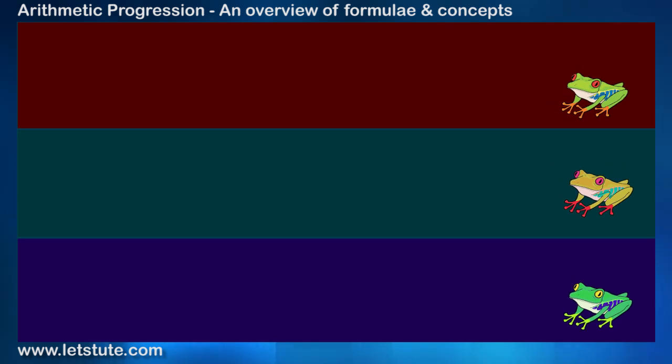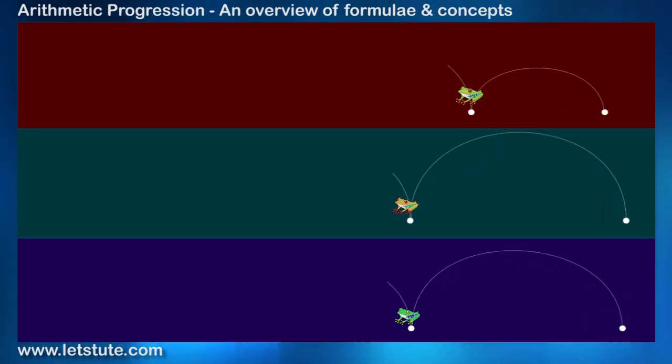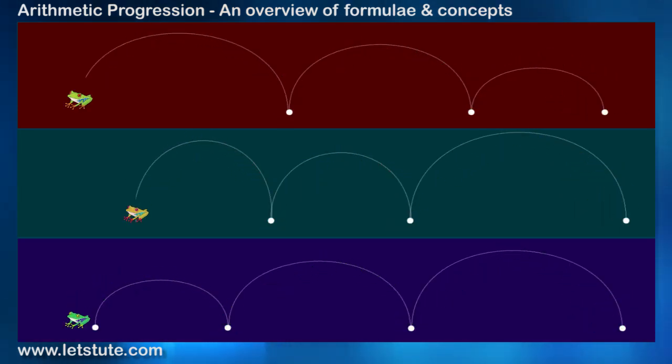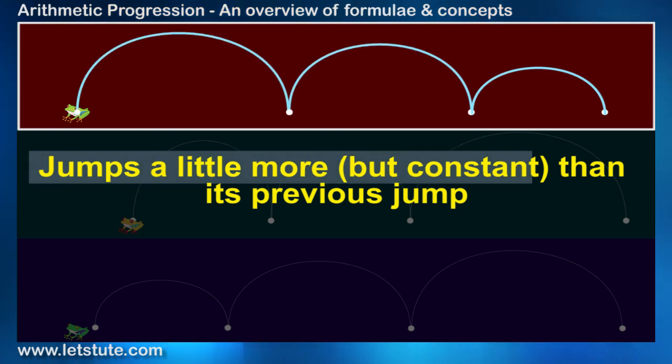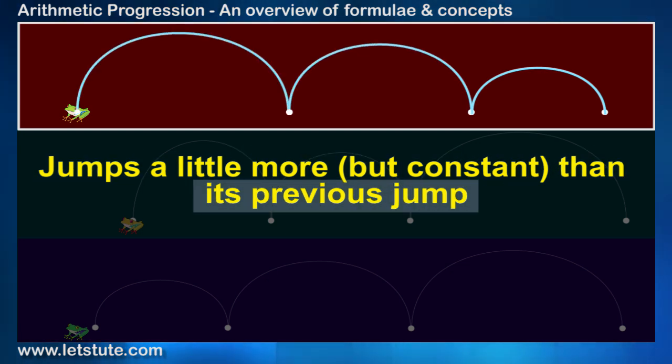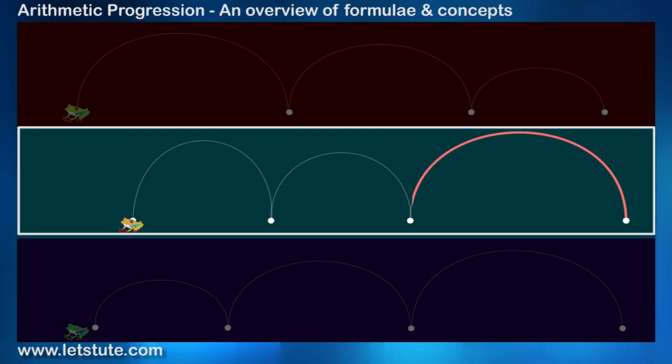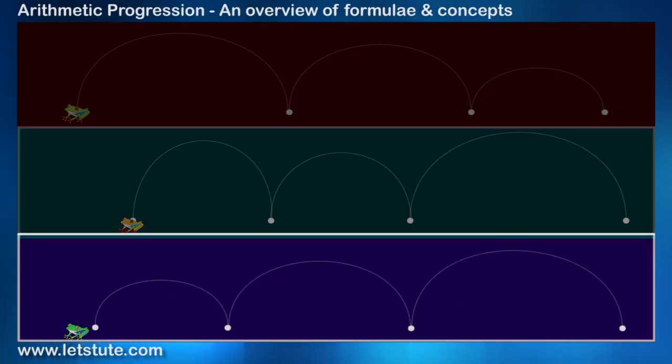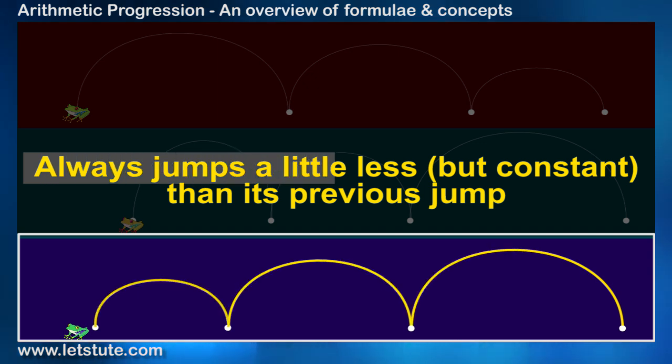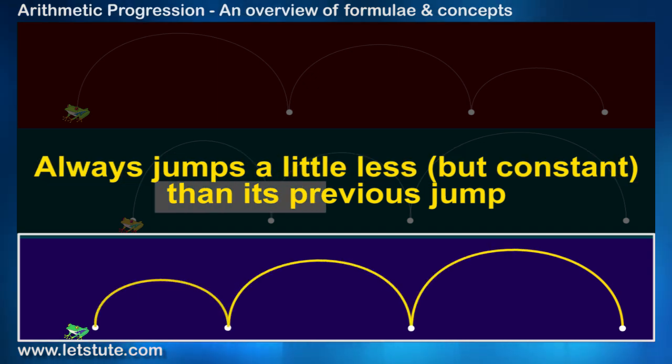Here there are three frogs and all of them have a different style of jumping. Frog 1 always jumps a little more but constant than its previous jump. Frog 2 always jumps in any length, it has nothing to do with its previous jump. Whereas frog 3 always jumps a little less but constant than its previous jump.